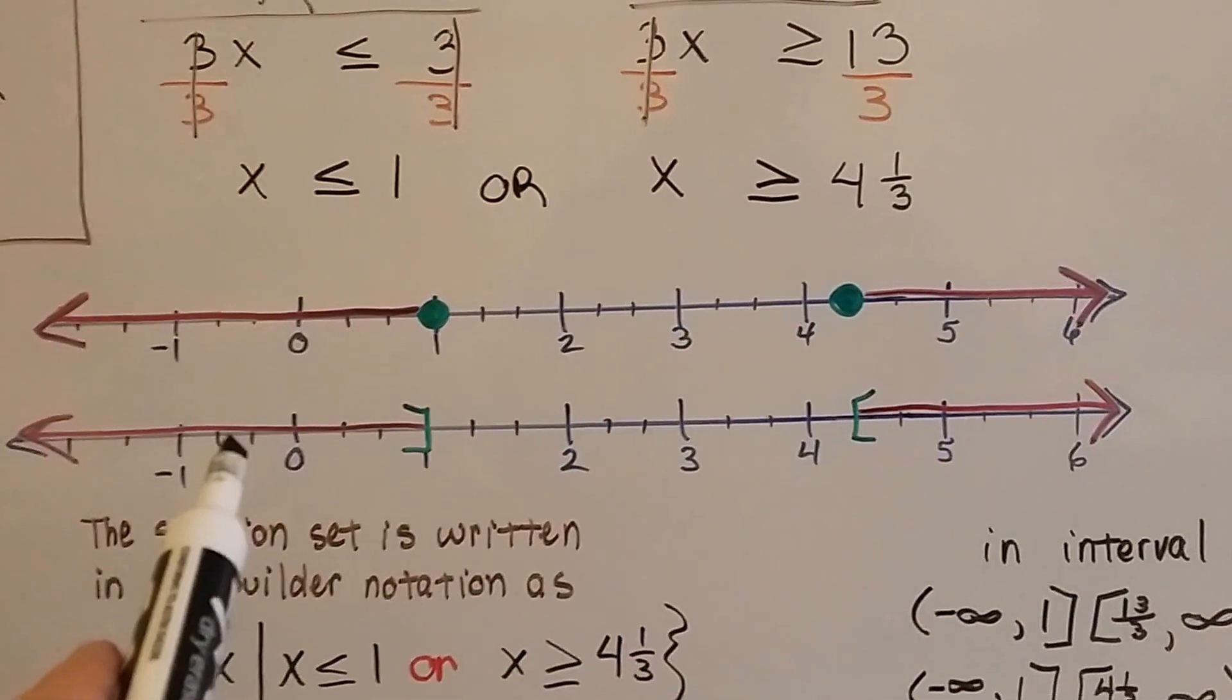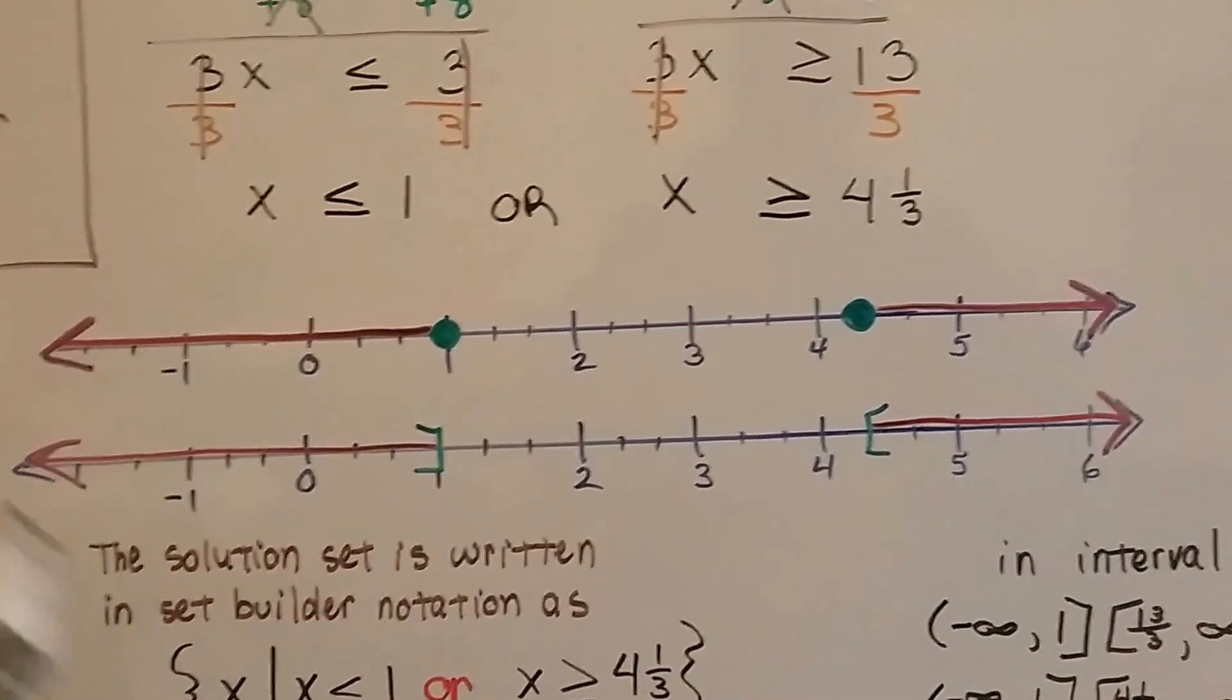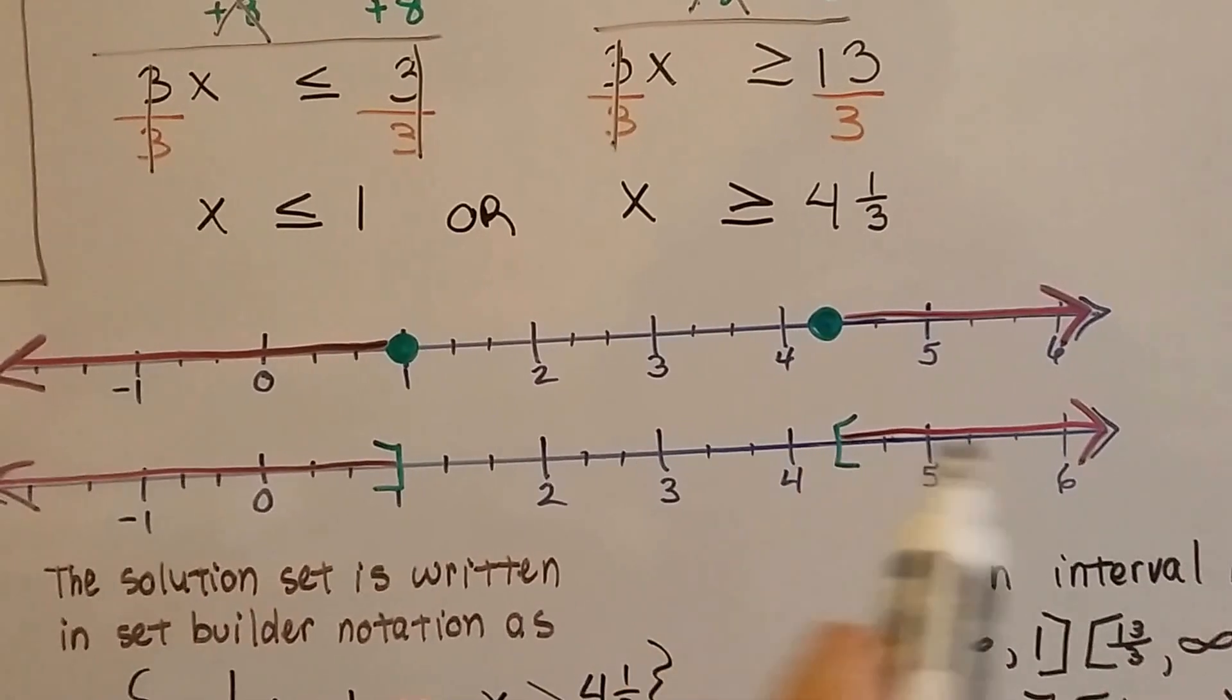If you want to do it my Algebra 2 way, we put the box bracket facing that way, showing it's included. And going this way, showing it's included.